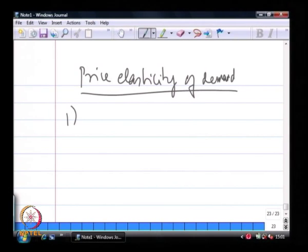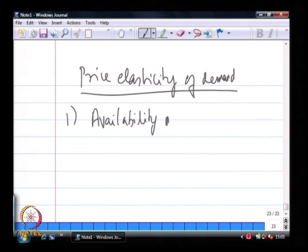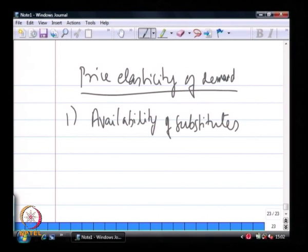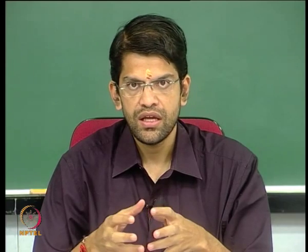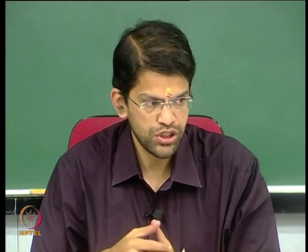The price elasticity of demand is mainly affected by three factors. The first is the availability of substitutes, which is probably the most important factor that influences the elasticity of a good or service. In general, if there are more substitutes, demand will be more elastic, because there are more alternatives available.